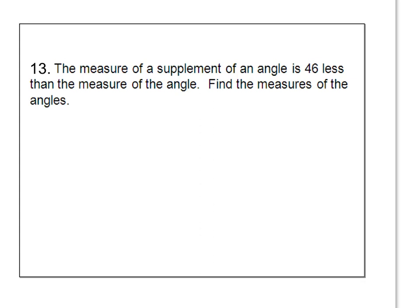So we have the measure of a supplement of an angle is 46 less than the measure of the angle. Find the measure of the angles. First thing I see is the word supplement. Supplement means they add up to 180. Supplementary. So something plus something is going to add up to 180. Since I don't know what either angle is, I call the first angle x. The other angle has to be 46 less than that one. So the other angle will be x minus 46. Aha! There is the equation. We have two angles. One of them is 46 less than the other one. And they are supplementary. They add up to 180.